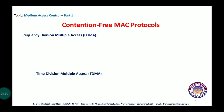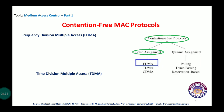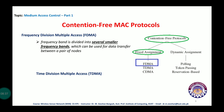The first contention-free fixed assignment protocol is Frequency Division Multiple Access (FDMA). It divides the medium into several frequency bands, each used for data transfer between a pair of nodes. Other nodes use different frequency bands, potentially interfering if not properly separated.